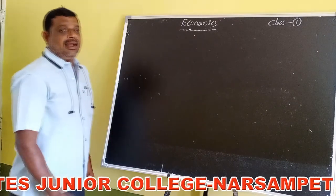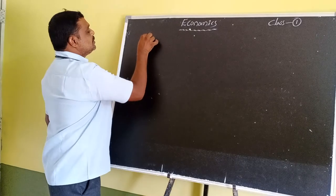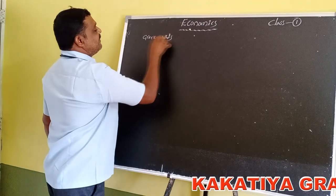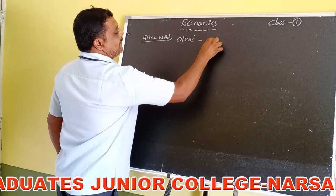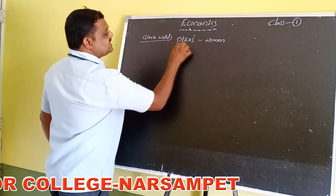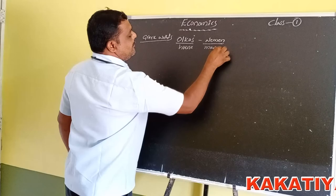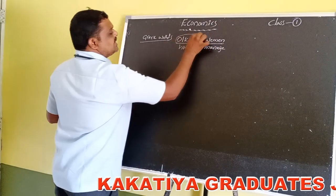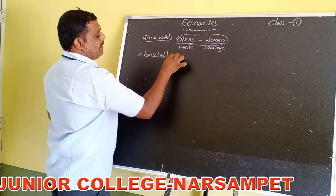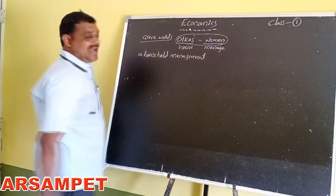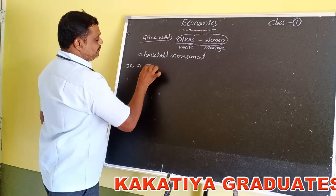Economics is an English word derived from two Greek words: Oikos and Nomos. Oikos means house, Nomos means manage. Together, Oikos-Nomos means household management, which was the meaning in ancient Greek.